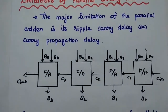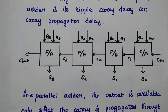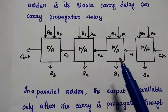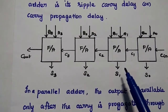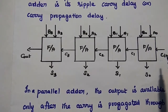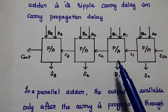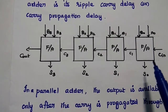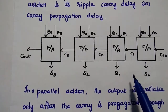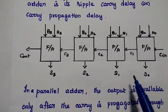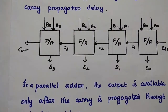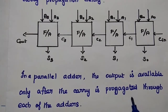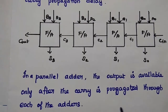Consider a 4-bit parallel binary adder. In a parallel adder, the higher order adder cannot perform the addition operation without the carry from the previous stage. So it has to wait for the carry from the previous stage. This leads to a time delay in the addition process, and it limits the operation speed. The output is available only after the carry is propagated through each of the adders.